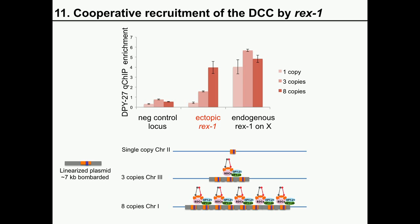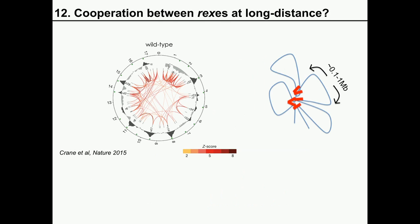This suggests that the reason REX1 can work on the X but not on autosomes is that on the X chromosome it can cooperate with other recruitment sites to recruit the DCC together. Such cooperative recruitment here would be across about 7 KB distances. On the X chromosome, distances between recruitment sites vary between 0.1 to 1 megabase. However, the Meyer lab using Hi-C showed that recruitment sites on the X chromosomes are actually close to each other in three-dimensional space, suggesting that the basis of recruitment could be physical interactions between REX sites.